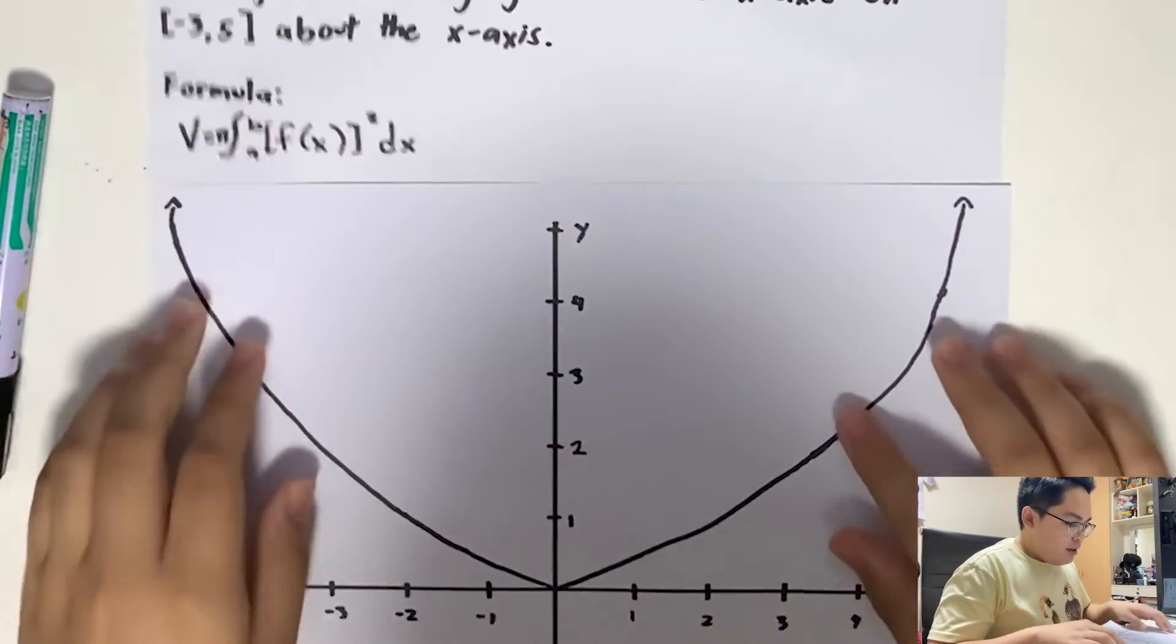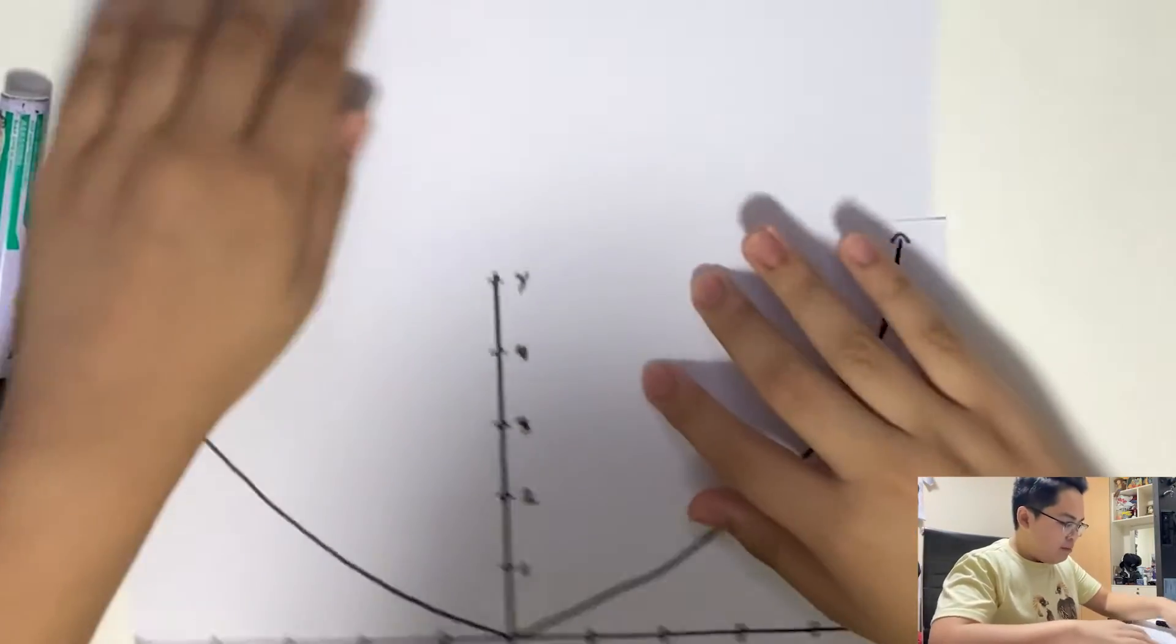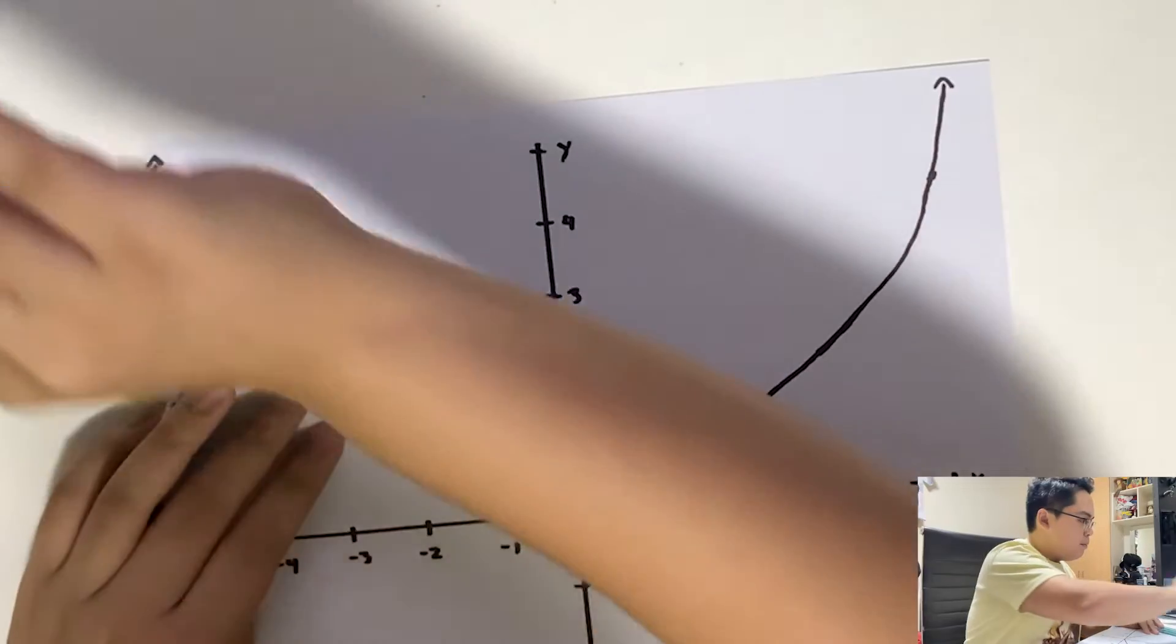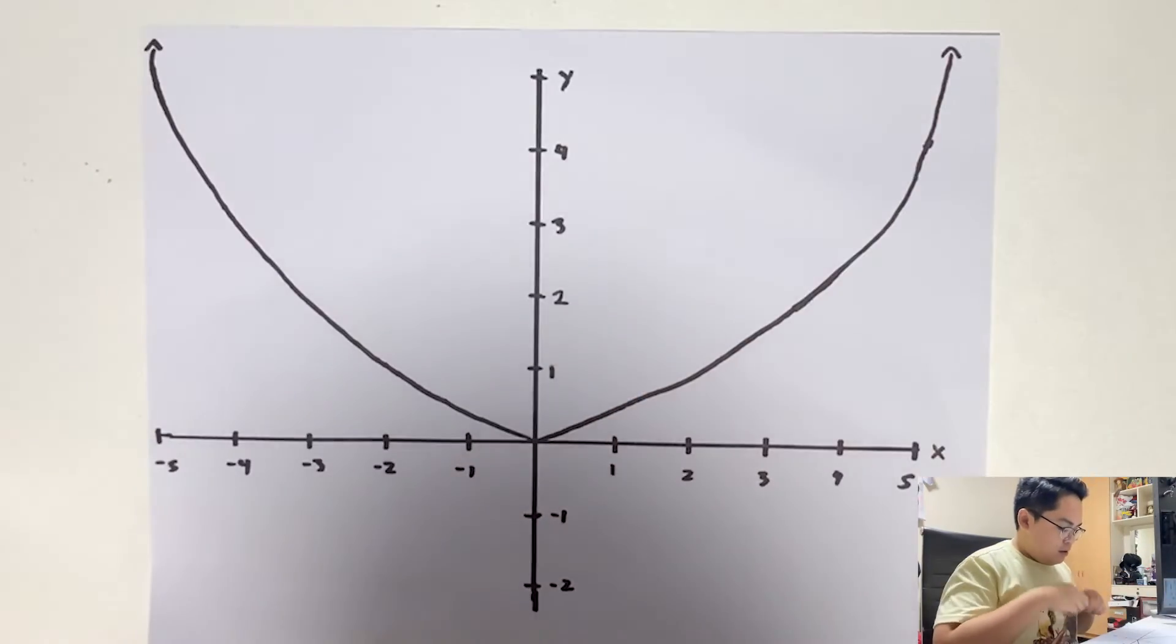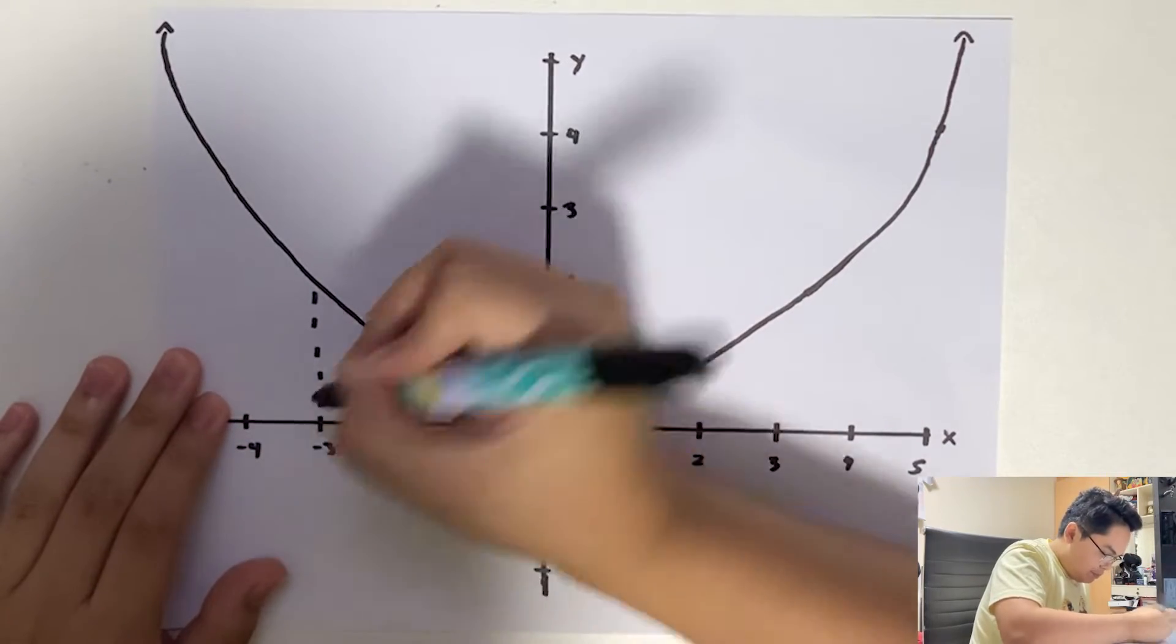So given the boundaries of -3 to 5, we can go ahead and create a boundary here in our graph. I'll show it here. So we can create some boundaries here from -3 to 5.